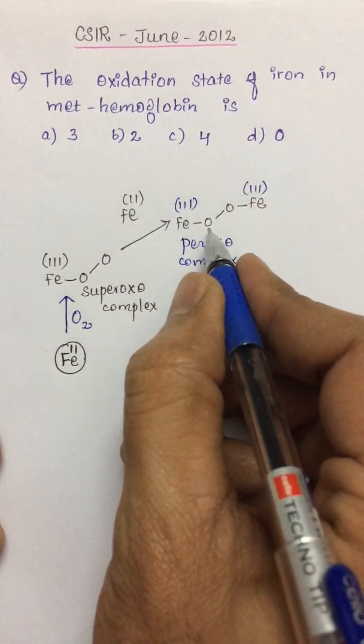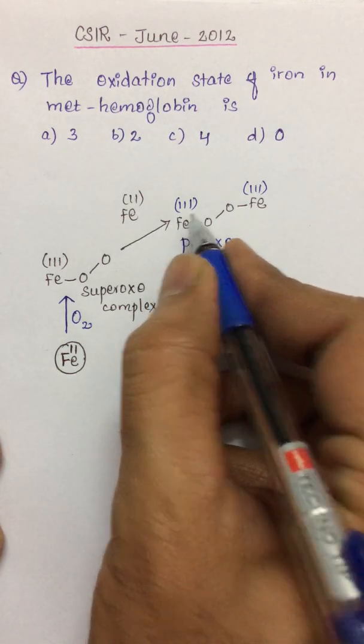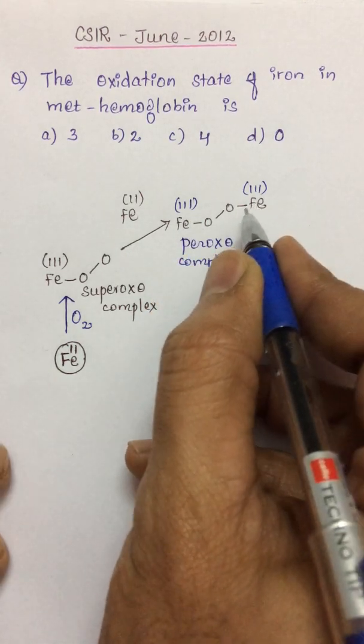The oxidation state of both irons is found to be +3. Since the dioxygen is converted into peroxo form, each iron is getting an oxidation state of +3.